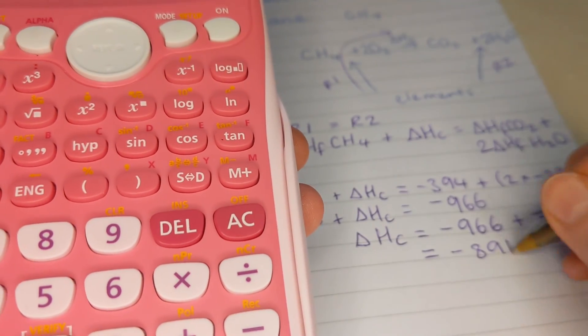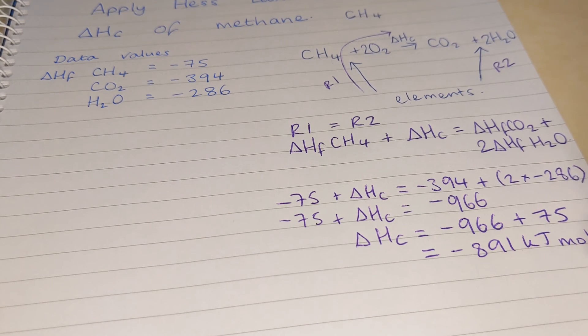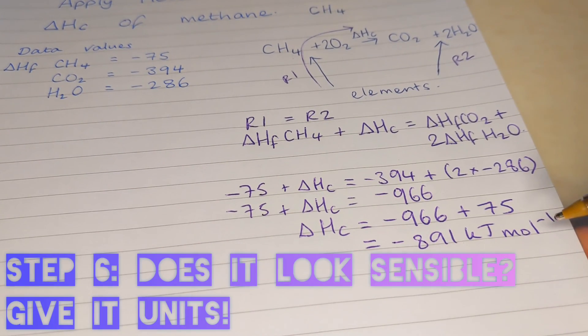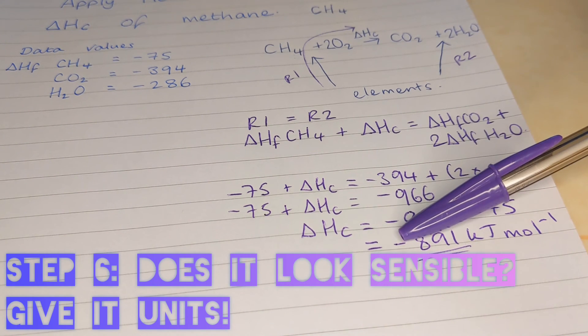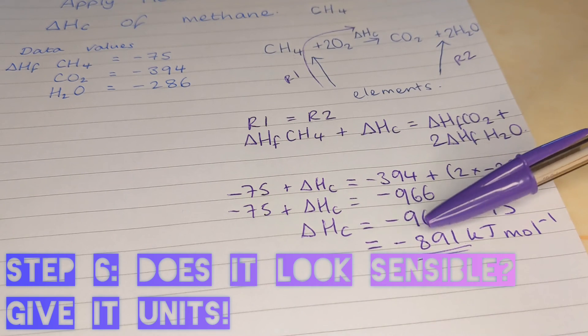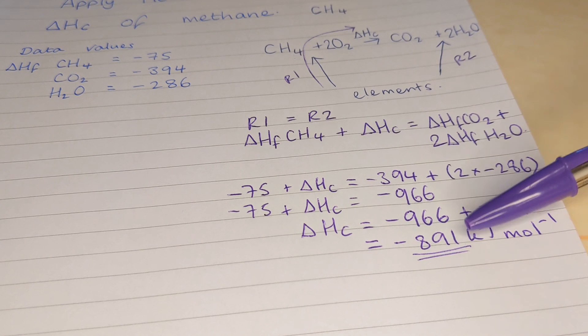And units of enthalpy change, kilojoules per mole. That's our answer. And does it look sensible? Yes, it does. It's got a negative on it and it should have. So we're expecting a negative exothermic value because combustions always have a temperature increase, which is exothermic negative delta H.